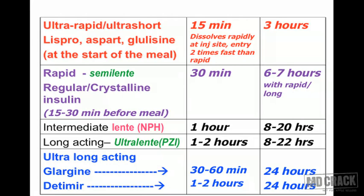The next group is long-acting insulins, also called ultra-lente insulins, abbreviated PZI — where P is protamine, Z is zinc, and I is insulin. Here the insulin is combined with both protamine and zinc for slow release, producing a longer action. The onset is one to two hours and duration is 8 to 22 hours, sometimes up to 24 hours. Recently, a new group of ultra-long-acting insulins was introduced.